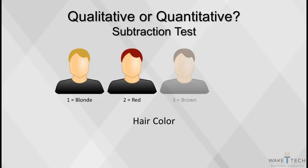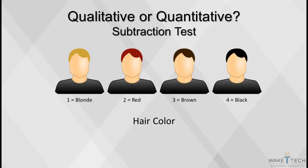For example, when hair color is coded as 1 equals blond, 2 equals red, 3 equals brown, and 4 equals black, the difference between the variables has no meaning, so it fails the subtraction test, which means hair color is a categorical or qualitative variable.